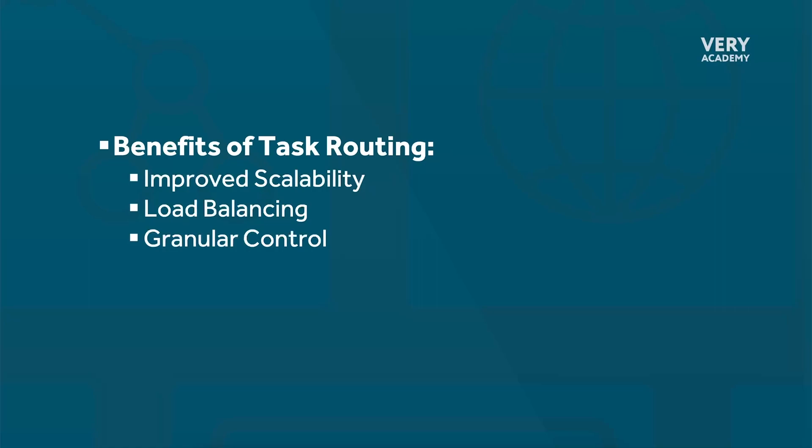Granular control means we have very fine specific control. Task routing provides fine-grained control over task distribution, allowing us to route tasks based upon names, custom attributes, runtime conditions, or even dynamic factors.